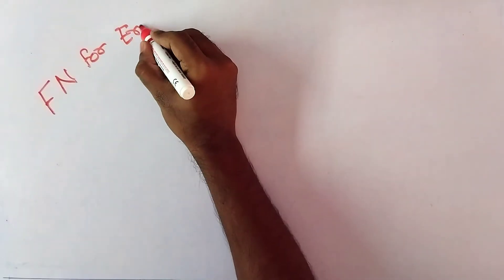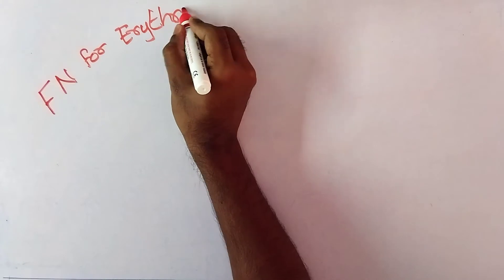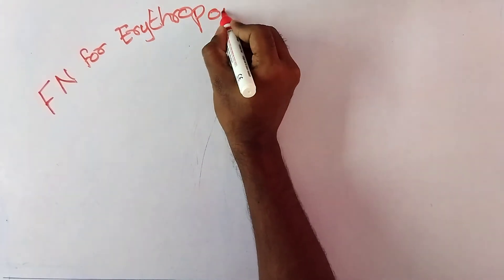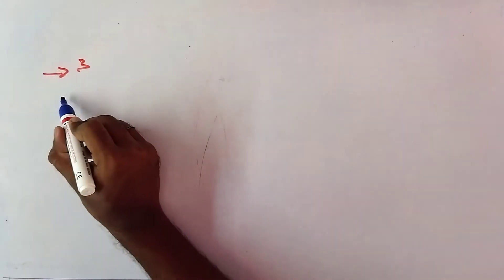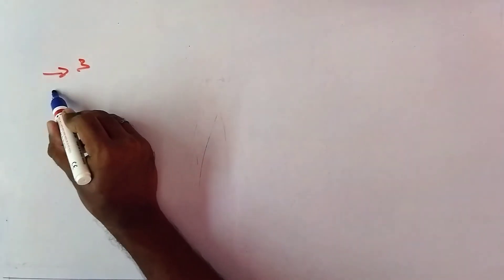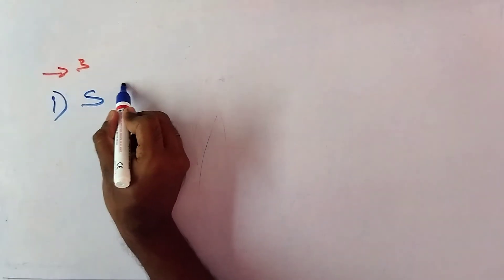Good evening all. Today our class is about factors necessary for erythropoiesis, or factors regulating erythropoiesis. Erythropoiesis means formation of RBC. There are three factors that are necessary for this formation. The first one is stimulating factors.